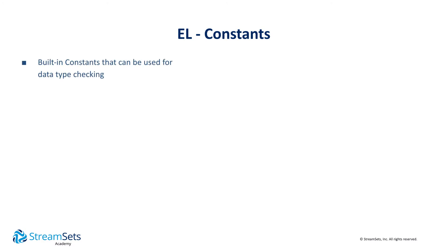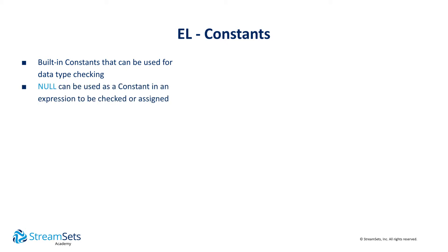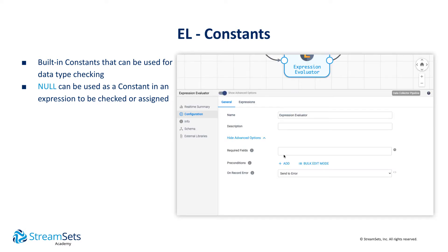The EL has built-in constants that can be used for data type checking. For example, to check if a value is a decimal or is null. With the null constant, it can be assigned as a value. Let's see some example usage of constants.